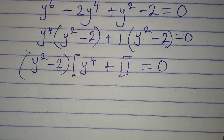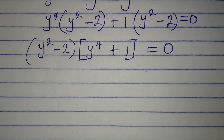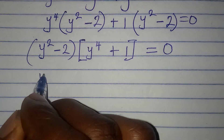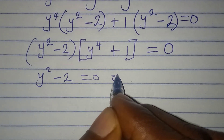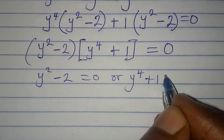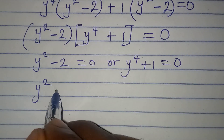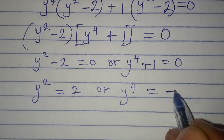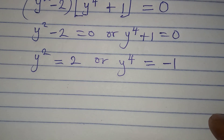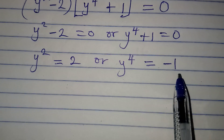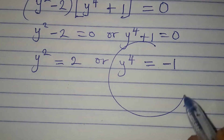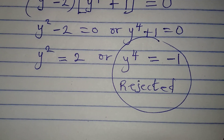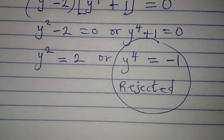This equals 0. Applying the zero product rule, either factor equals zero: y squared minus 2 equals 0, or y to the power of 4 plus 1 equals 0. From the second equation, y to the power of 4 equals negative 1. Because we have a positive value on one side and a negative on the other, this leads to complex numbers, so we reject that solution entirely.